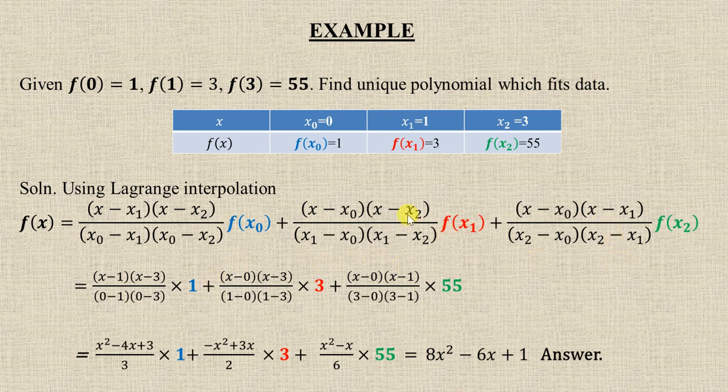Number of points are three, so number of terms will also be three. In the first term x minus x₀ is missing, second term x minus x₁ is missing, third term x minus x₂ is missing. In the denominator, x is replaced by x₀, x₁, and x₂ respectively.